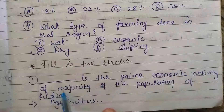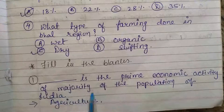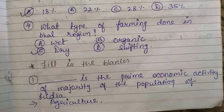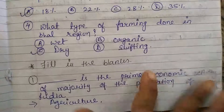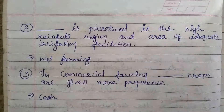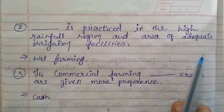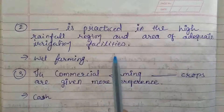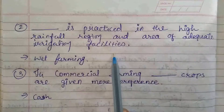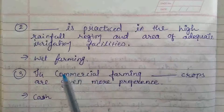Now, fill in the blanks. The prime economic activity of the majority of the population of India — Bharat ke andar jo total population hai, unki prime activity — that should be agriculture. Next blank: DAS is practiced in the high rainfall region and area of adequate irrigation facility — that is wet farming.